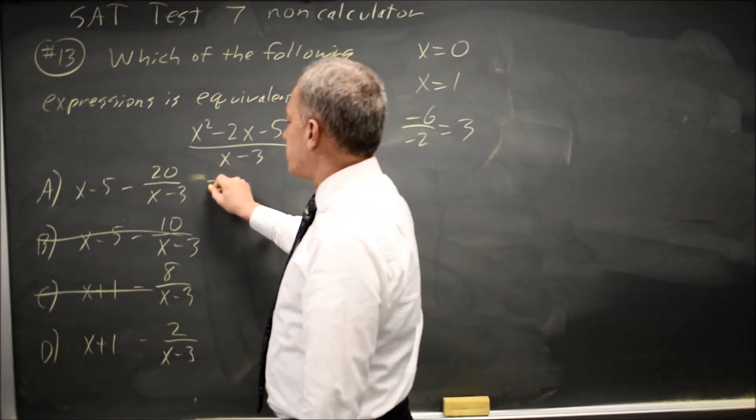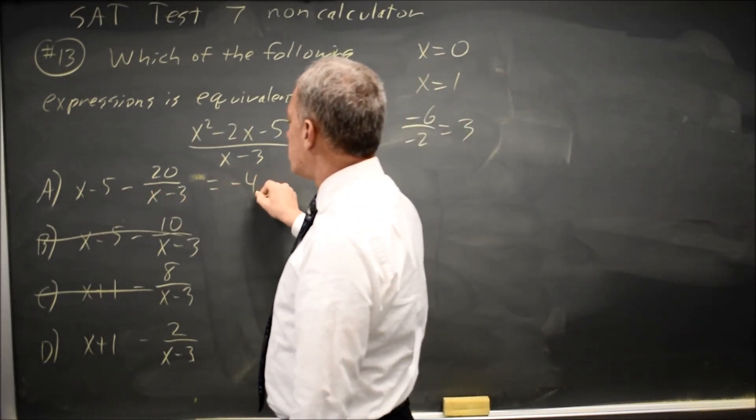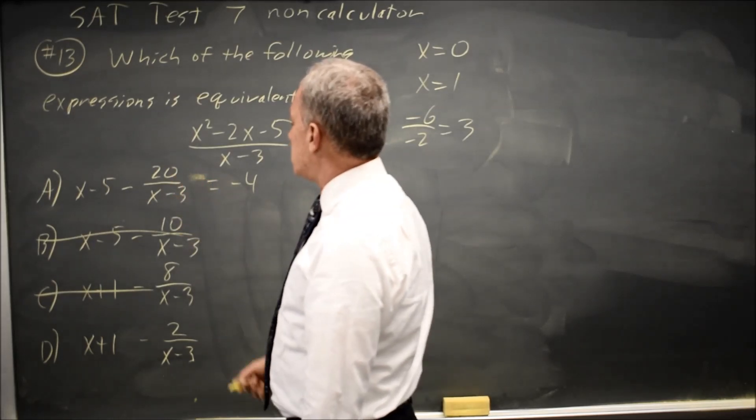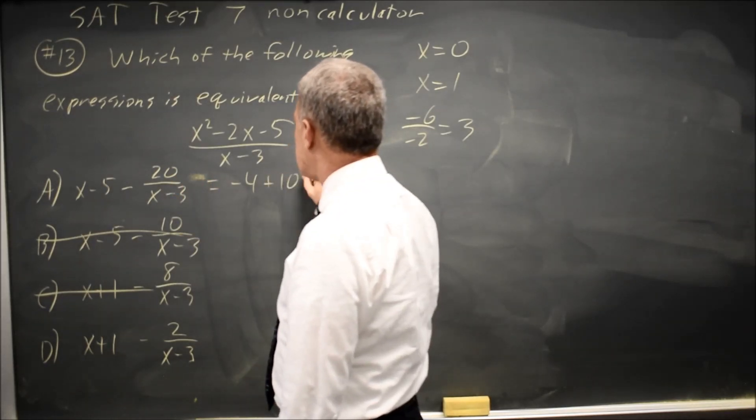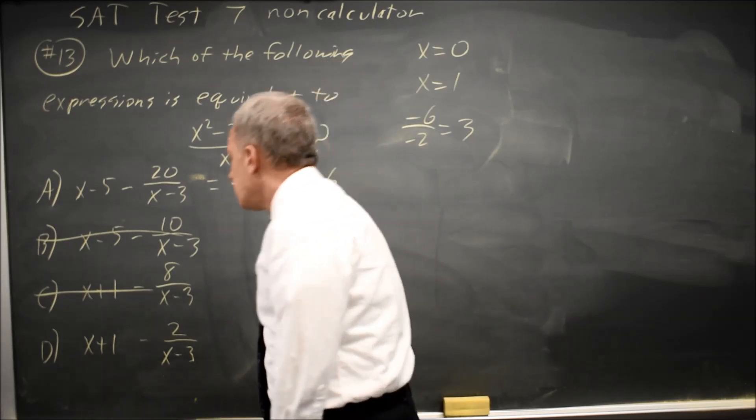At 1, I get 1 minus 5 equals negative 4. Minus 20 over negative 2 is plus 10. Gives me positive 6.